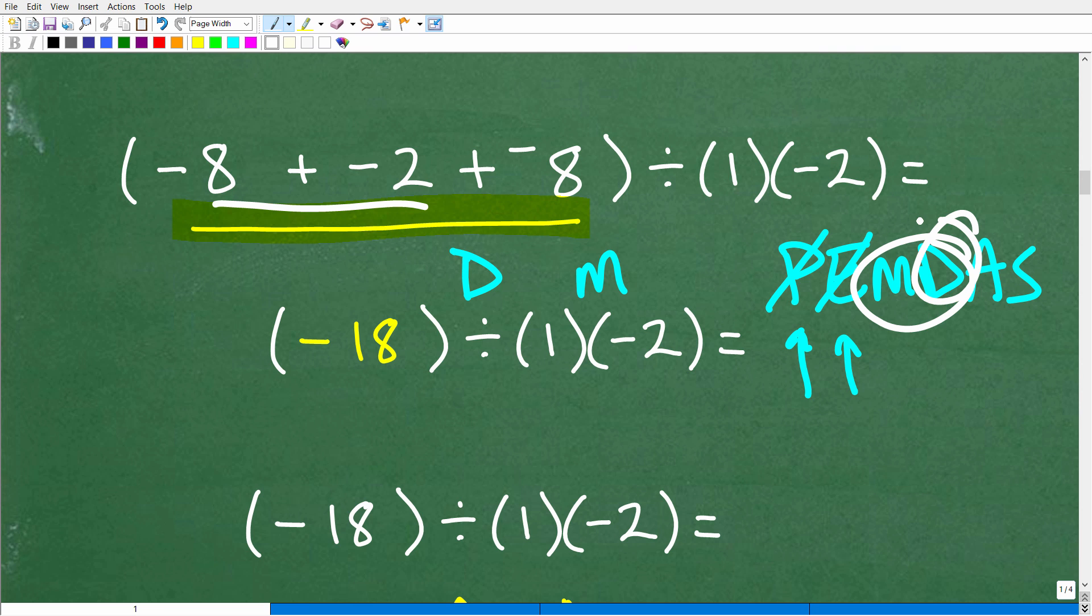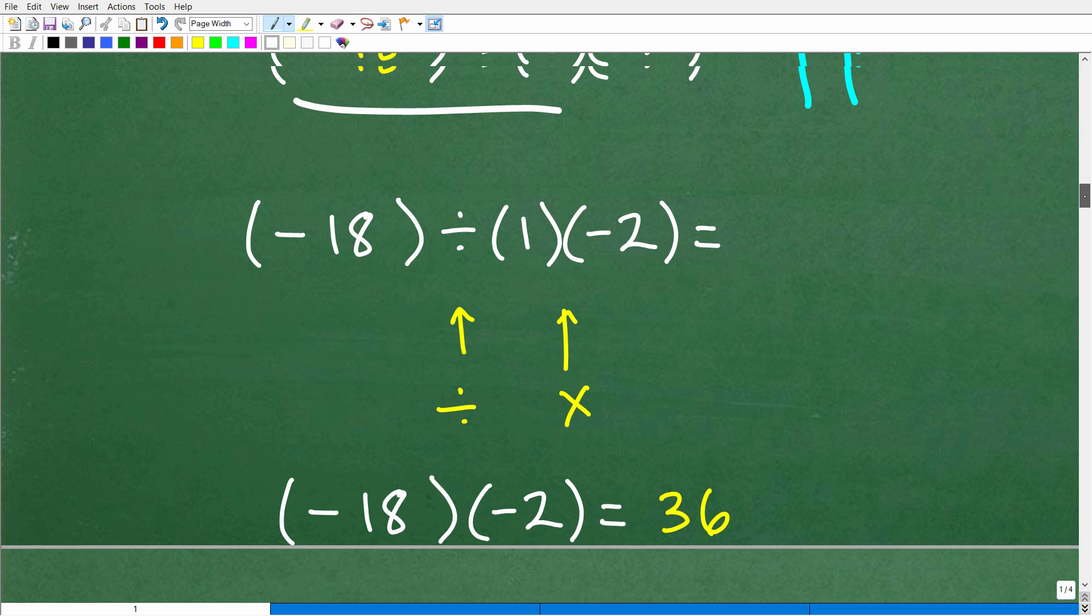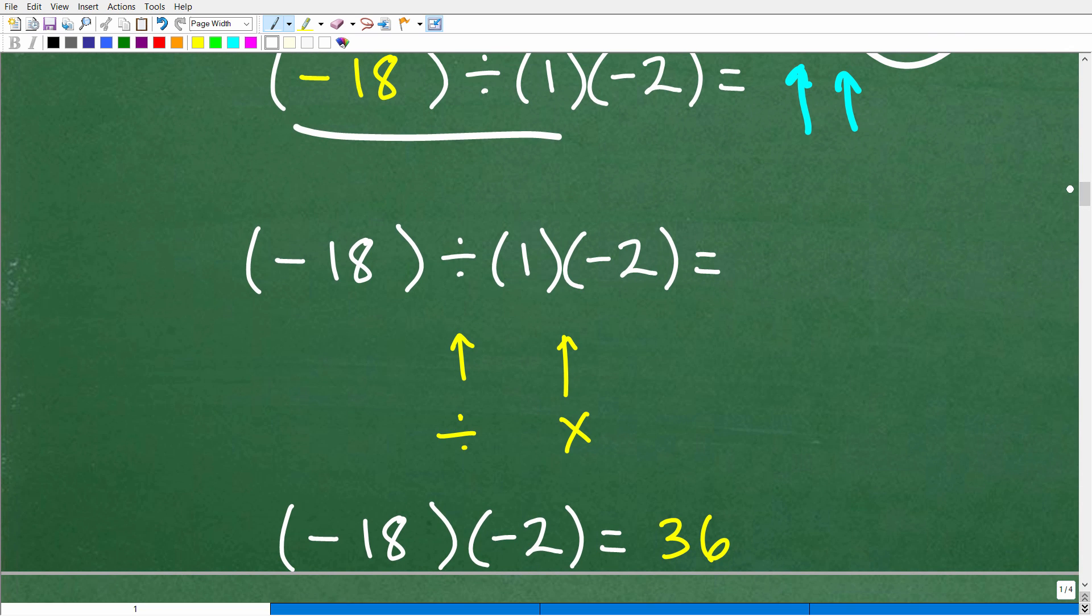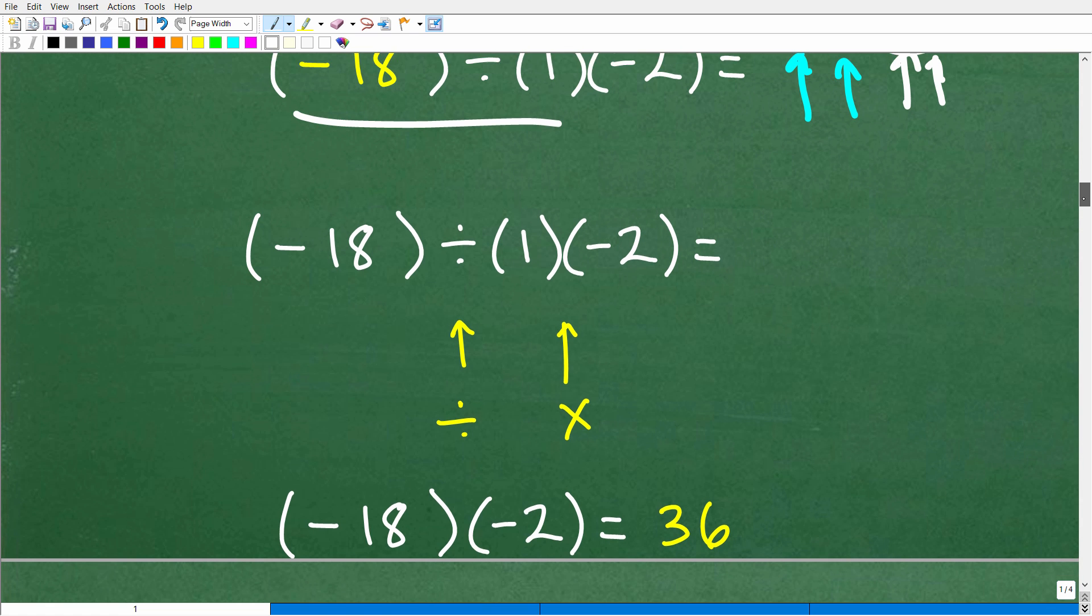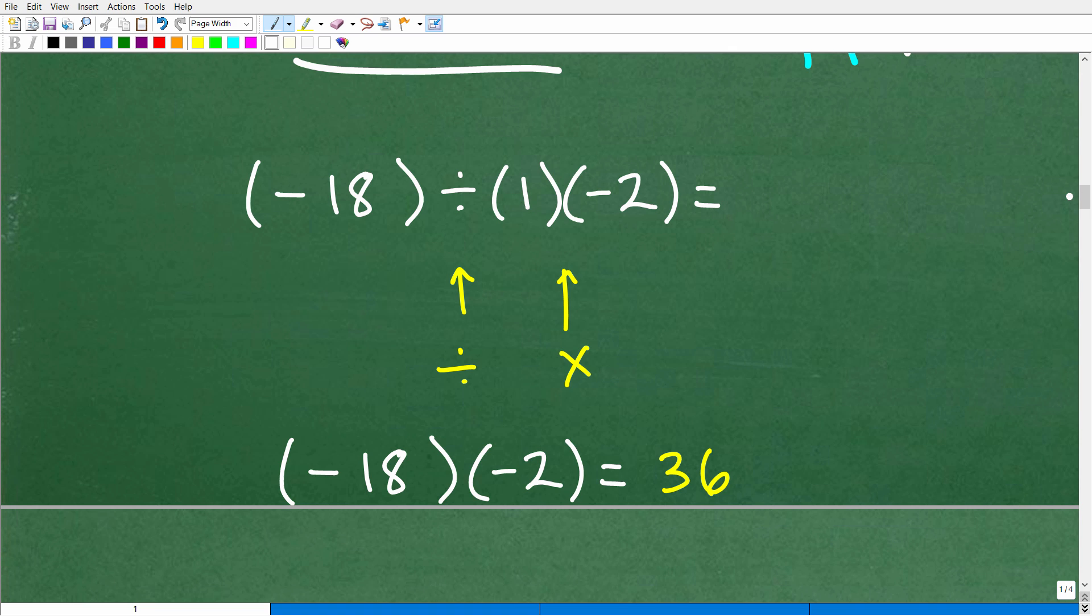So what do we see first from left to right? We see division first. Okay. So this is what we need to do. Negative 18 divided by negative one. All right. So now this right here, if you multiplied, you could still get the right answer. Because you got lucky because this is a negative one. But a lot of students make errors when it comes to the order of operations, namely because this step right here between multiplication and division, they think that you always have to do multiplication first and then division. That's not the way it works. It's whatever you see first from left to right.